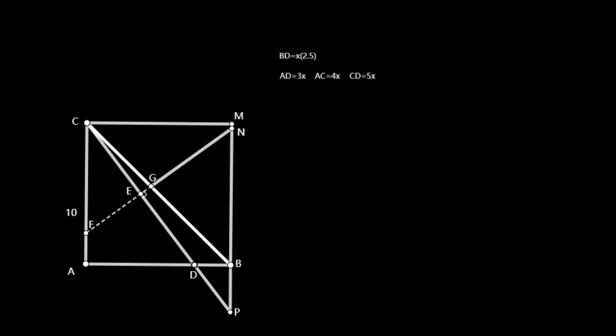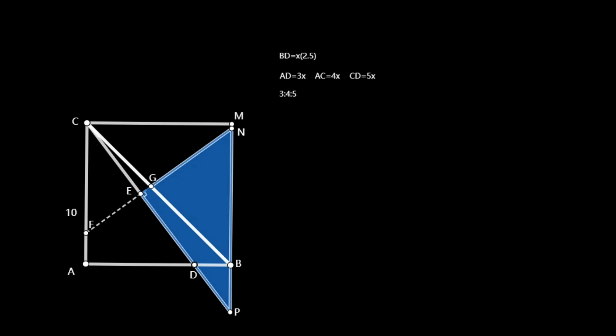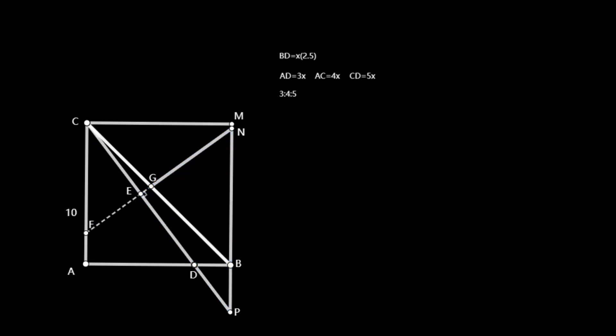Now let's figure out the crease length when folding to the three-quarters point at the bottom. We expand isosceles right triangle ABC to form a square. The other vertex of the square is M. Extending FG intersects BM at N, and the extension of CD intersects BM at point P. Let BD equal X, so AD equals 3X, AC equals 4X, and CD equals 5X. The ratio of side lengths in right triangle CAD is 3 to 4 to 5, and all similar triangles share this ratio.